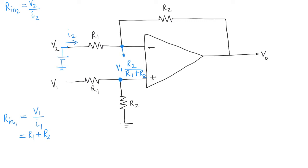Now let's write an equation for I2. We get: V2 minus V1 times R2 over (R1 + R2), divided by R1, will give us I2.